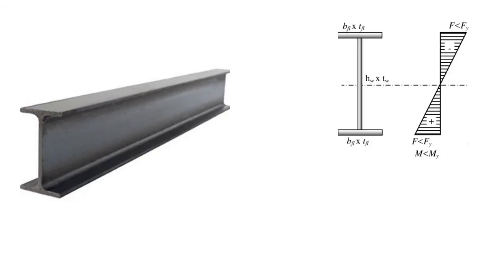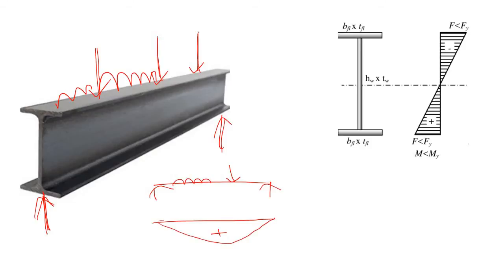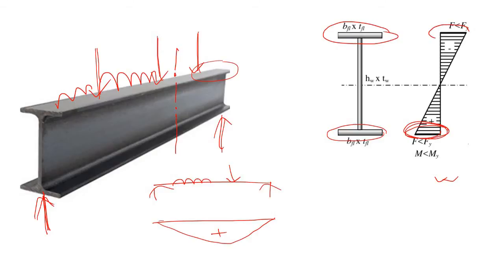To understand why web buckling matters, let's first understand the function of an I-section. If the I-section is subjected to a transverse load — like a point load or UDL — there will be some bending moment within the section. For a simply supported beam, the bending moment diagram looks like a curve, and the stress distribution across any cut section shows the upper part in compression and lower part in tension. The majority of stresses are accumulated in the flanges, so we consider the flanges carry the bending moment as a tensile force and a compressive force.